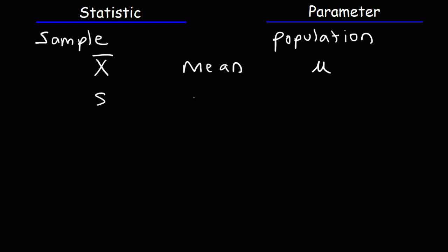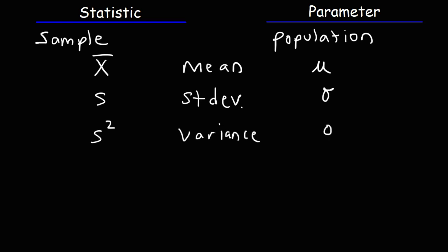S stands for the standard deviation of a sample, so that would be a statistic. Sigma is the standard deviation of the population — that's a parameter. S squared represents the sample variance, and sigma squared is the variance of the population, so that's a parameter.